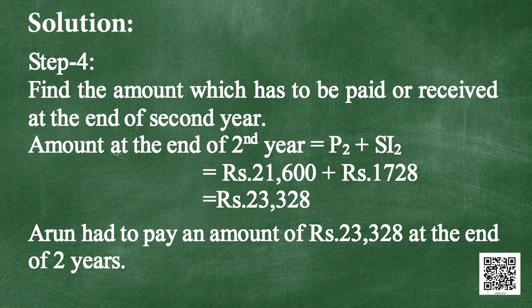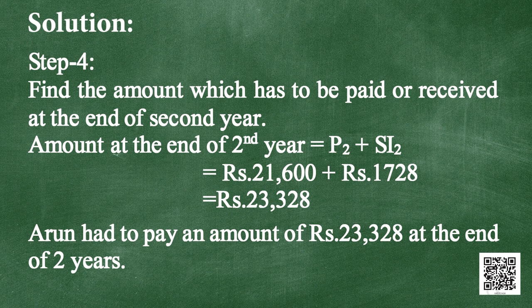Step 4: Find the amount to be paid at the end of the second year. Amount at end of year 2 = P2 plus SI2 = rupees 21,600 plus rupees 1,728 = rupees 23,328. So Arun has to pay rupees 23,328 after 2 years.